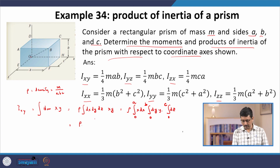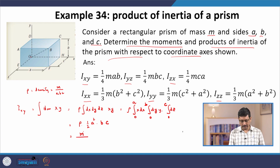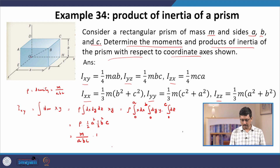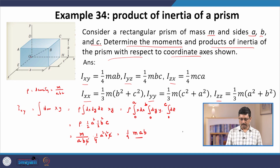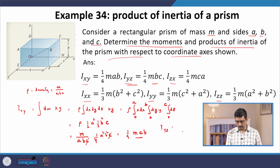This gives rho times (1/2 a squared) times (1/2 b squared) times c. Replacing density rho by m divided by abc, we get I_xy = (1/4) m a b. By symmetry, switching the indices, I_yz = (1/4) m b c, and I_zx = (1/4) m c a.